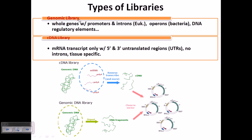Just as books are present in libraries — where different segments contain novels, short stories, and different types of books on different topics — in a similar way, genomic libraries contain the whole gene concept, and cDNA libraries contain all the mRNA transcripts present inside the cell at a particular time in a particular type of cell. So it's a representation of the cell's genetic makeup.